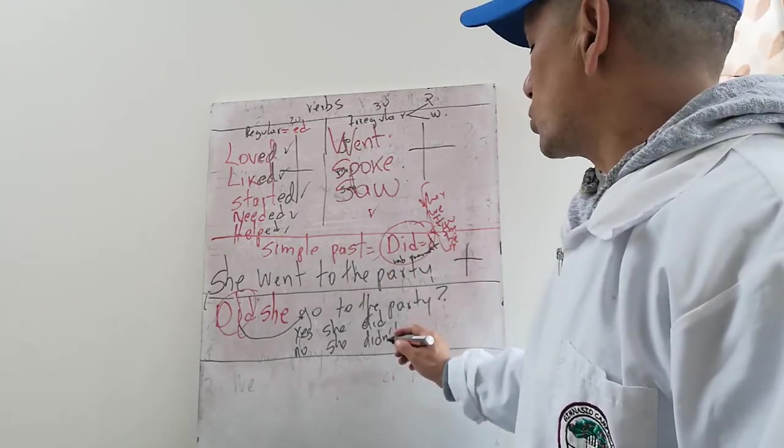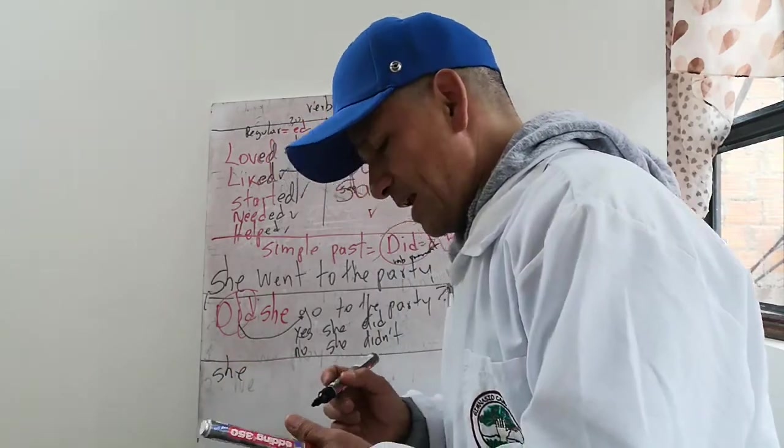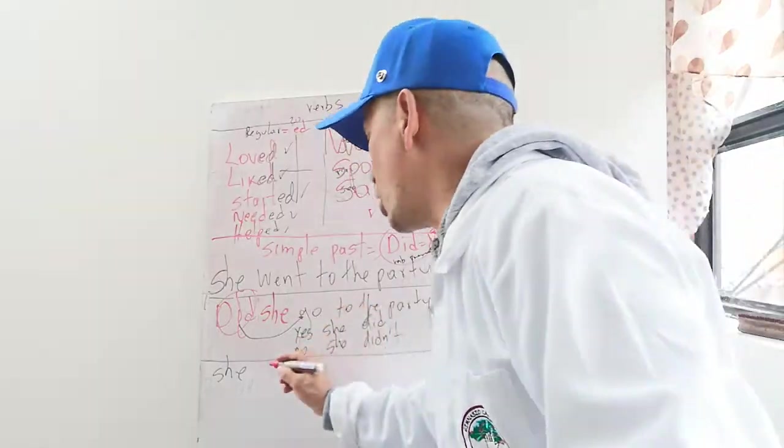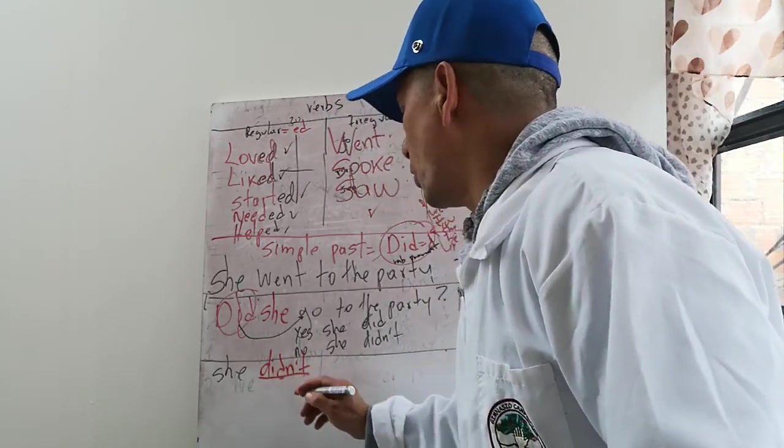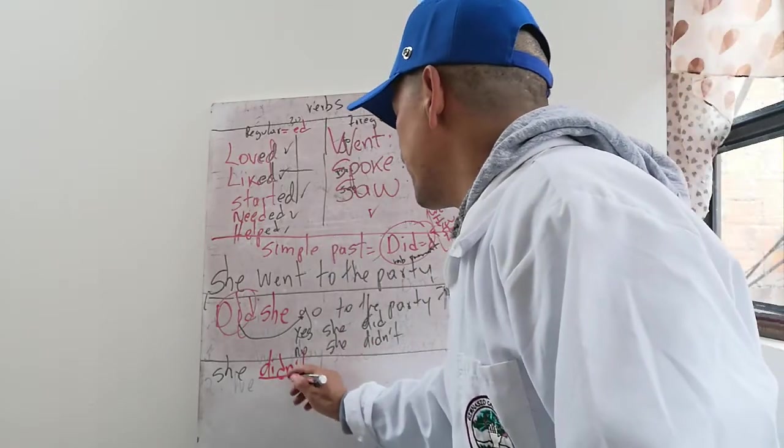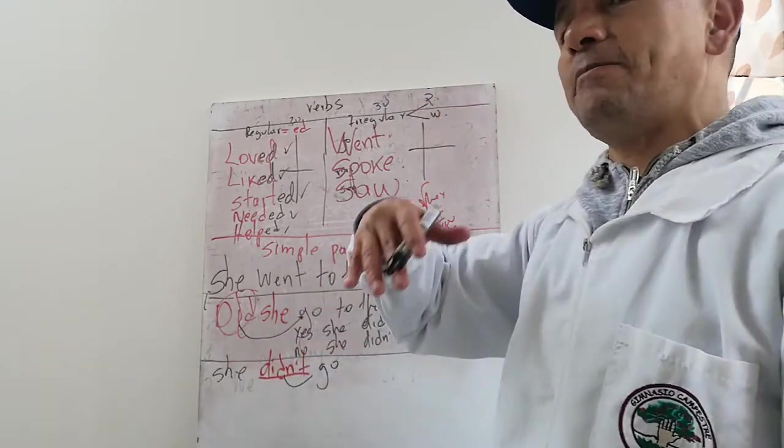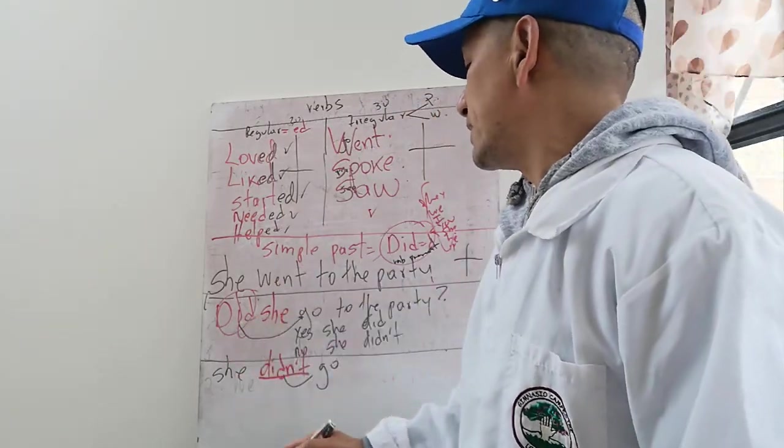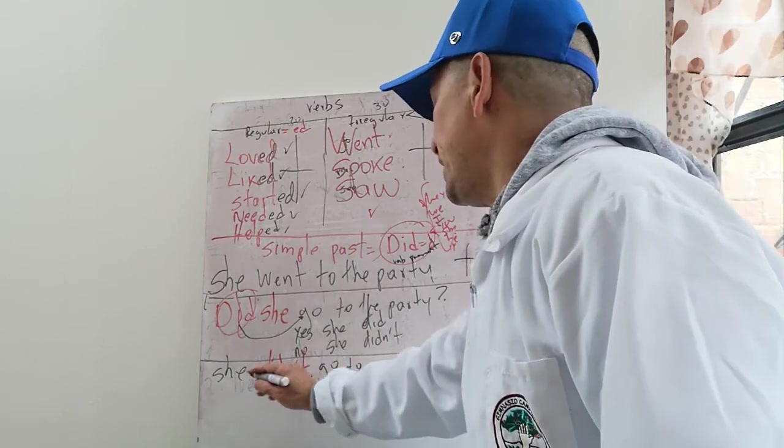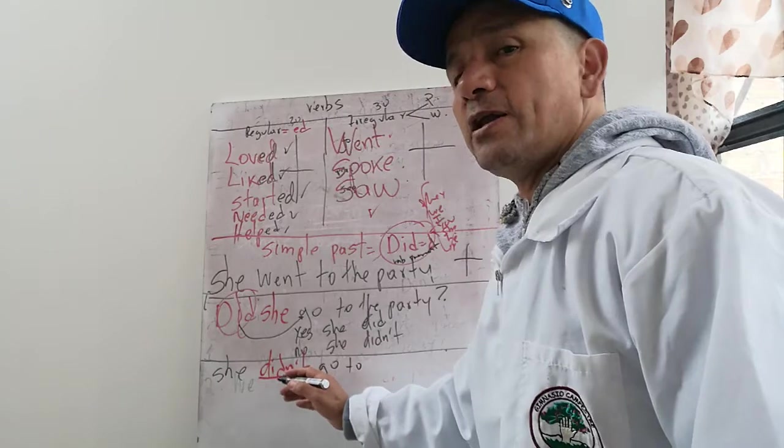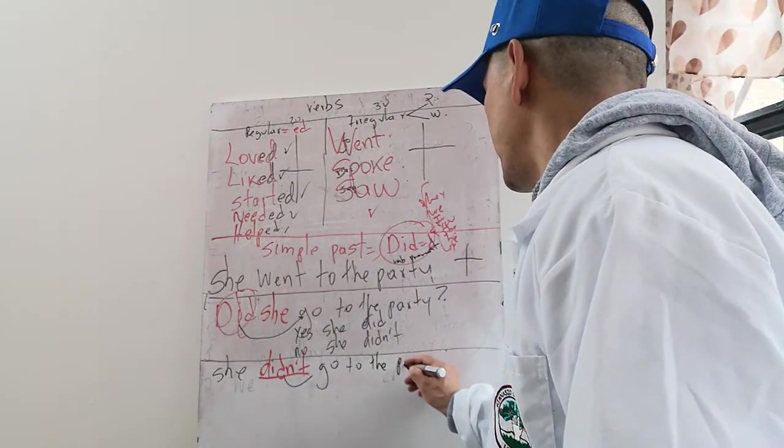Debo aprender a hacer negaciones también. Para hacer negaciones debo usar la palabra DID. Entonces she, y la palabra DIDN'T es un NO, pero es un NO en pasado. She didn't, y el verbo tiene que estar en presente. Este DIDN'T pasa el verbo al pasado, igual que el DID. She didn't go to the party, ella no fue a la fiesta.